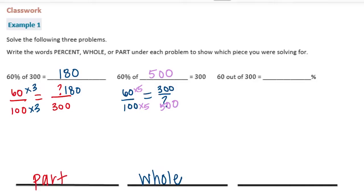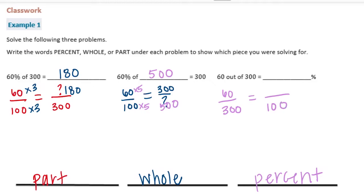And then: 60 out of 300 is equal to what percent? So we're trying to find the percent. A percent is always out of 100. Since it got smaller, we're going to be dividing. 300 divided by 3 is equal to 100, so 60 divided by 3 is 20. So this is 20%.